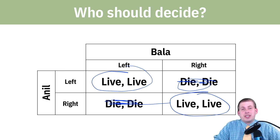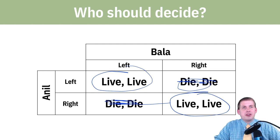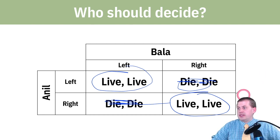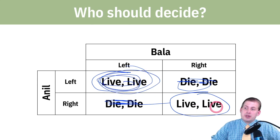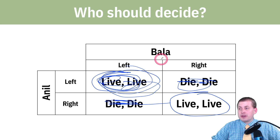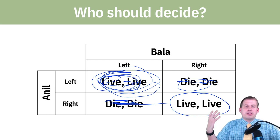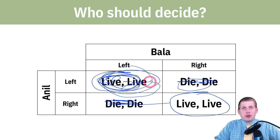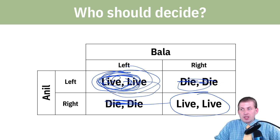What if Anil already has a left-hand-drive car he brought from another country and spent a lot of money on? Bala doesn't have a car yet. That lends Anil some degree of power — he'll be more willing to exert that power to end up in the left-driving outcome. If Bala has less power, even if he has a right-driving car, they'll end up not where payoffs are best for everybody, but where the more powerful party's preferences are reflected.